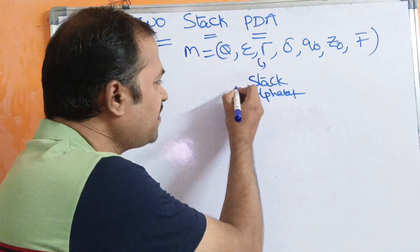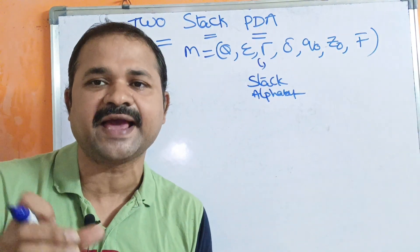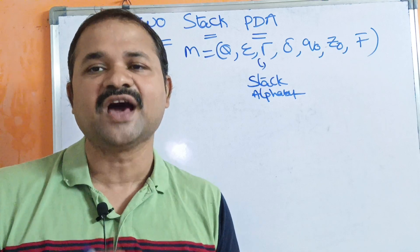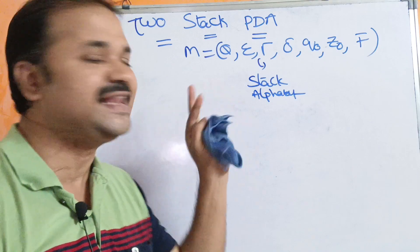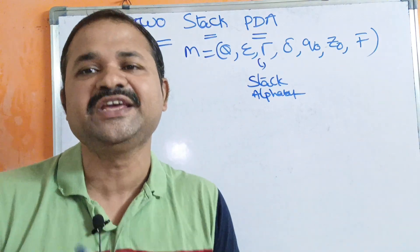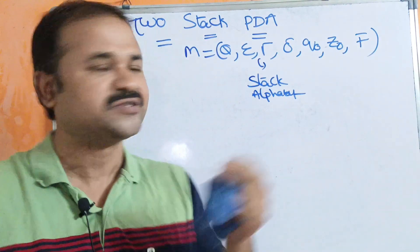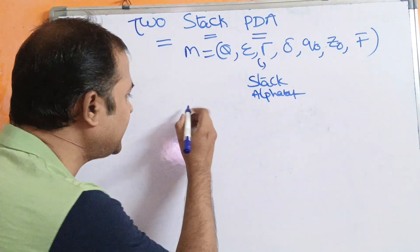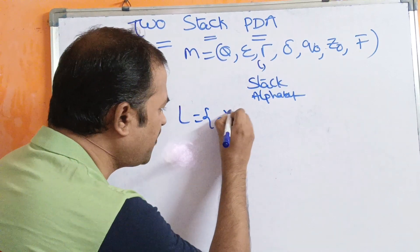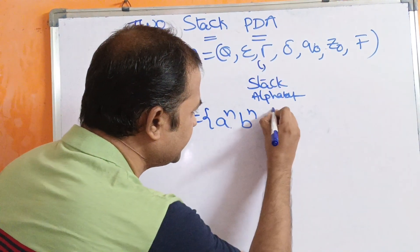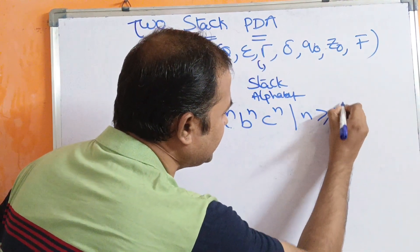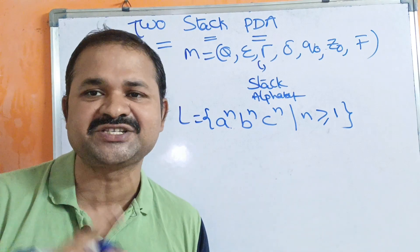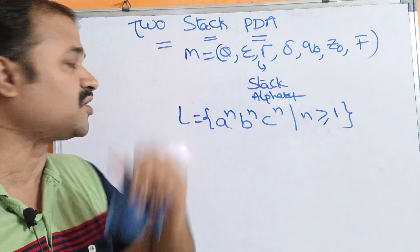Generally, we will have only one stack in the PDA. But in order to handle some languages, a single stack is not enough. We need to take two stacks — that's why this concept is named as two-stack PDA. For example, the language L = A^N B^N C^N where N ≥ 1 requires two stacks.